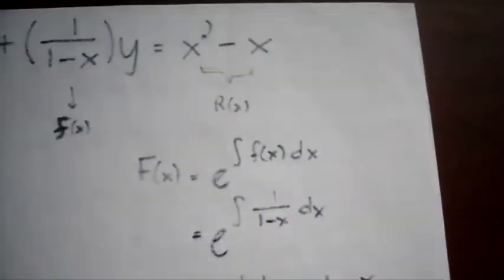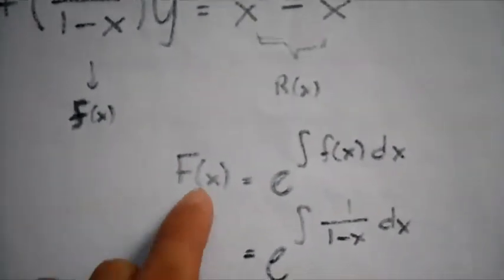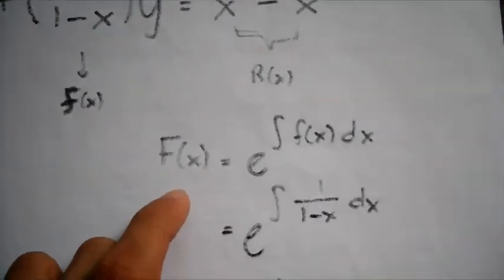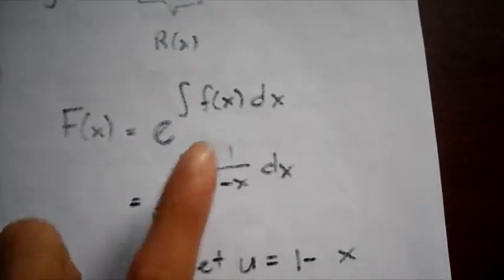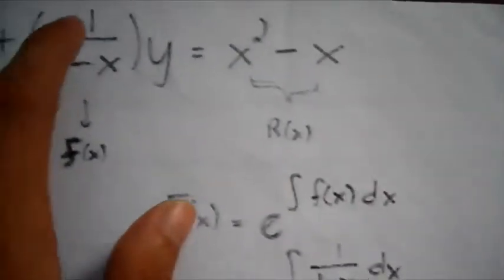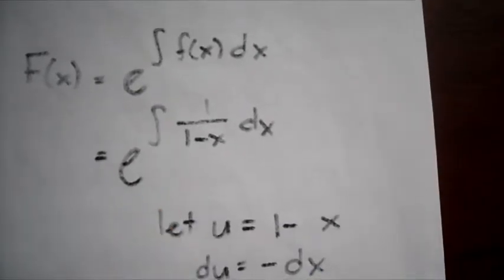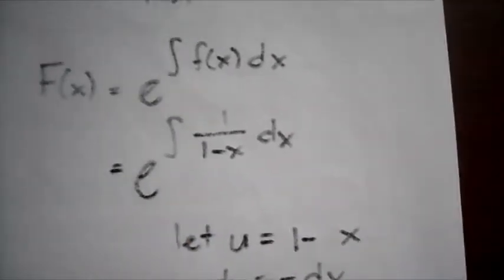To solve for it we get the uppercase F of x which is equal to e to the power of the integral of f of x dx. Substituting it with this value we get e to the integral of 1 divided by 1 minus x dx.